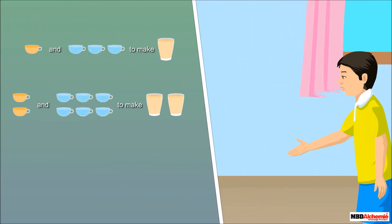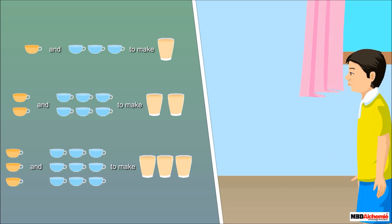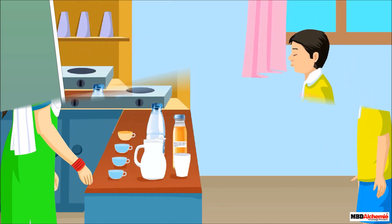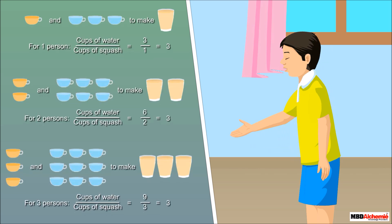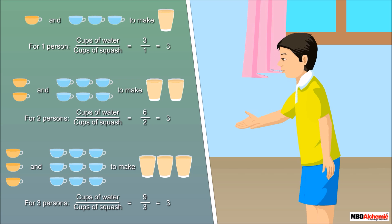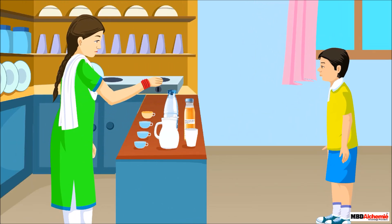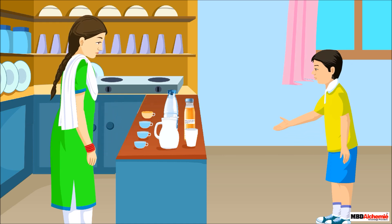Here, the quantity of water added is three times the quantity of squash. How did you find that out? If we divide the number of cups of water by the number of cups of squash, we get three each time. It is denoting three times one.